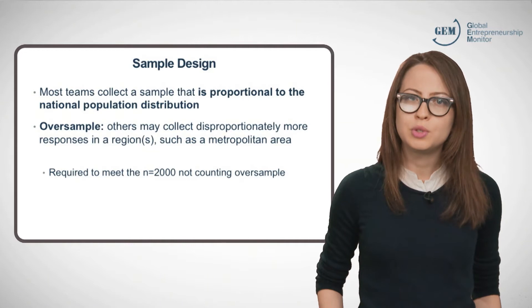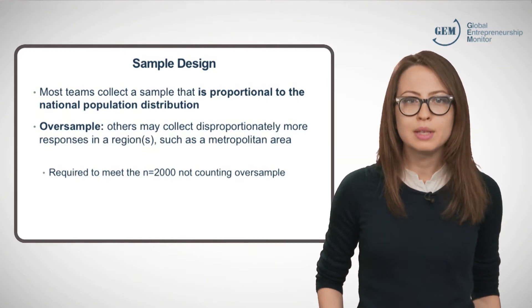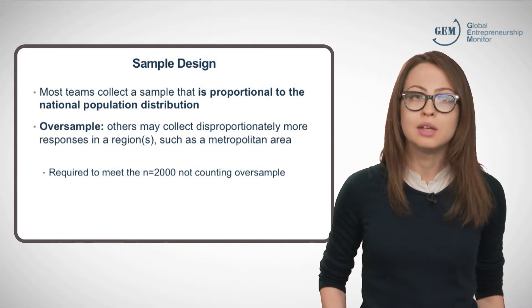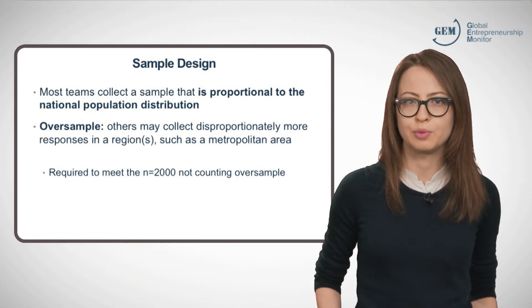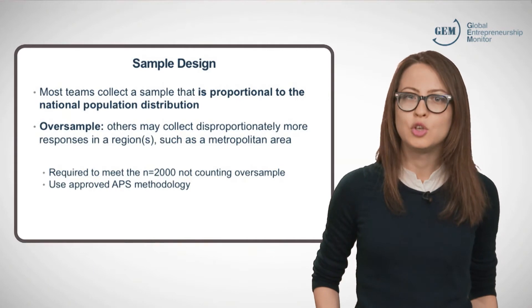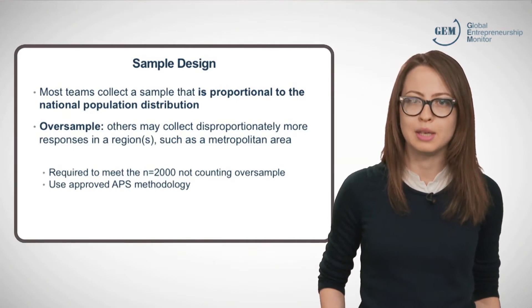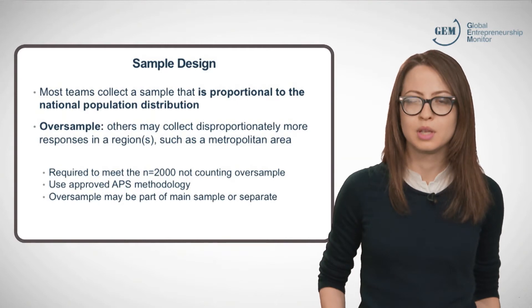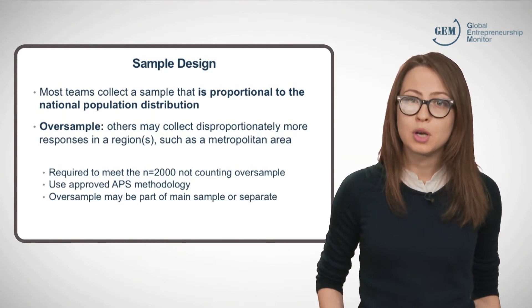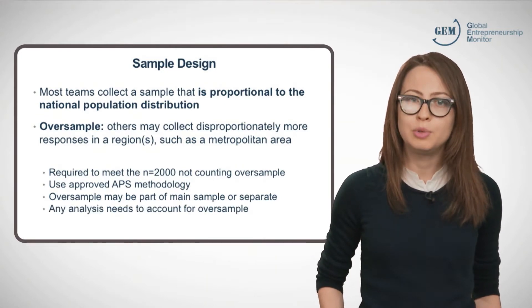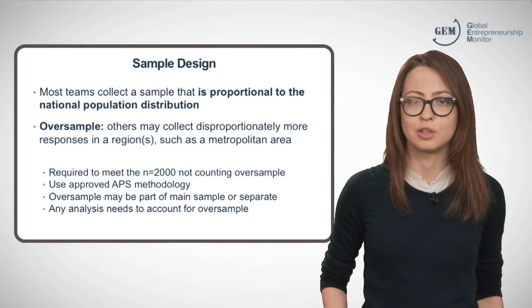If you do choose to collect an oversample, you must submit at least 2,000 nationally representative responses, not counting the extra cases in that oversampled region, and you must sample this region according to approved APS methodology. The oversample can be submitted separately, but if it is part of the main APS dataset, you must compute weight values to account for this inclusion.